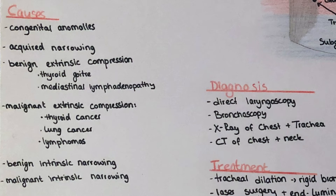There are also benign intrinsic narrowing factors at the level of the subglottis or the trachea. Those can be for example intubation or tracheostomy related, granulomatosis, amyloidosis, tracheomalacia, benign tumors, and also tracheal trauma. At the level of the carina or the main bronchi, those include granulomatosis, a foreign body, tuberculosis, or sequelae after photodynamic therapy.